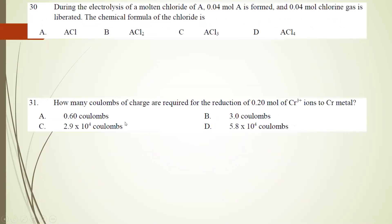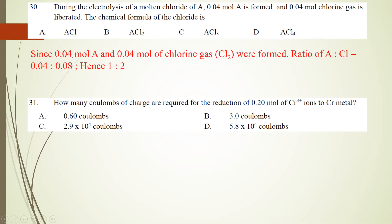Number 30: during electrolysis of a molten chloride A, 0.04 mol of A is produced while 0.04 mol of chlorine gas is produced. What is the chemical formula of the chloride? Stoichiometrically, 0.04 mol of A to 0.04 mol of Cl2. The ratio of A to Cl is 0.04 to 0.08, giving 1:2 because Cl2 is diatomic. So the answer is B.